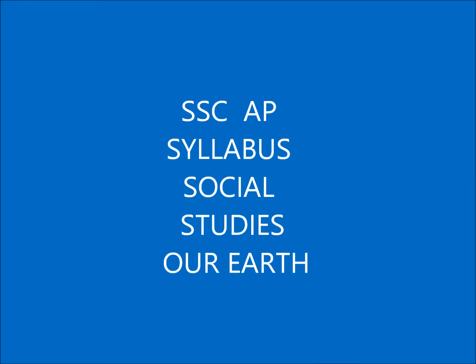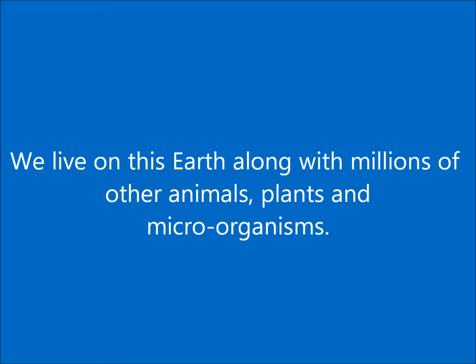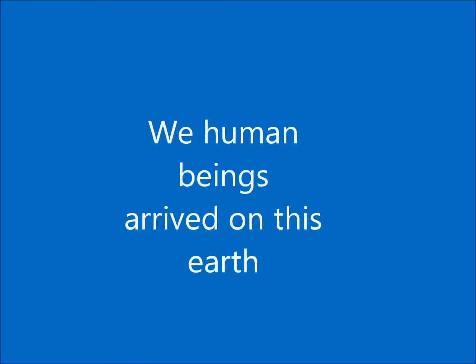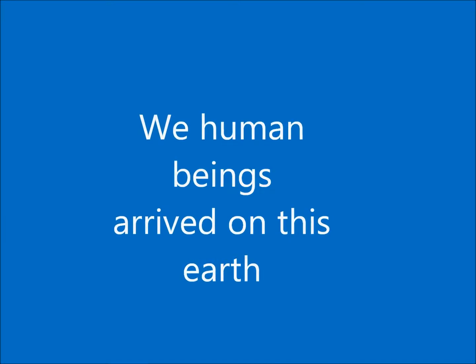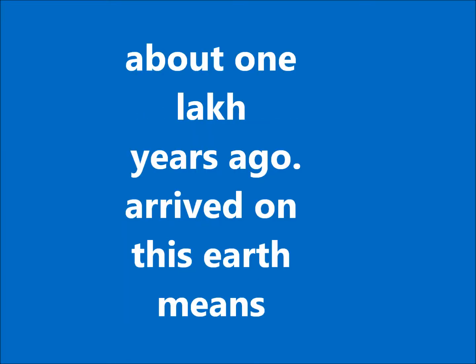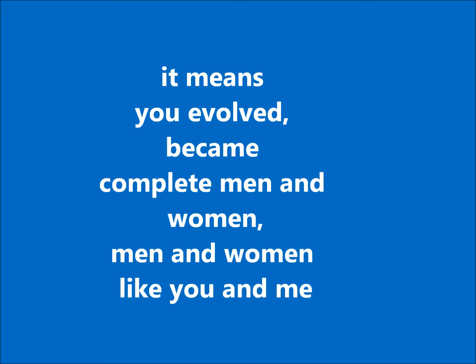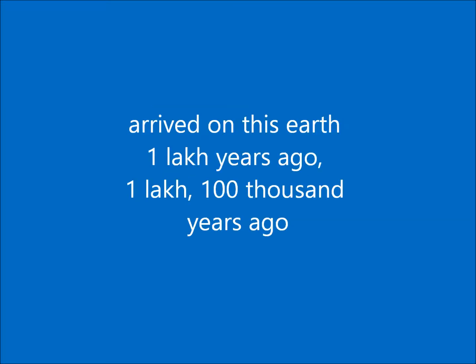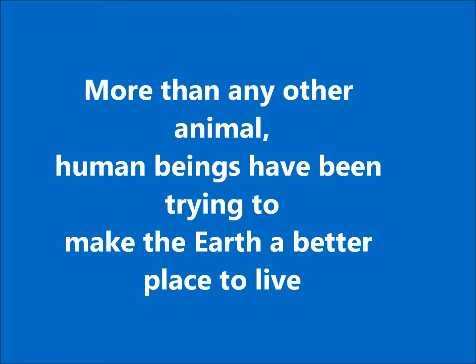Our Earth. We live on this earth along with millions of other animals, plants and micro-organisms. We human beings arrived on this earth about one lakh years ago — obviously this doesn't mean we came from another planet; it means we evolved and became complete men and women. Men and women like you and me arrived on this earth about one lakh, that is one hundred thousand, years ago.